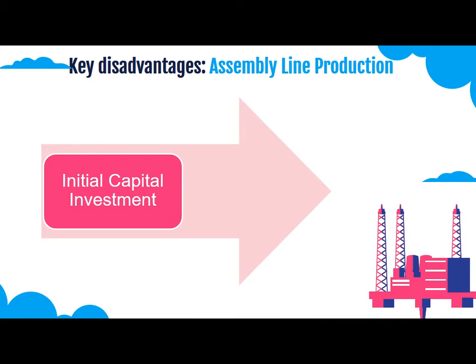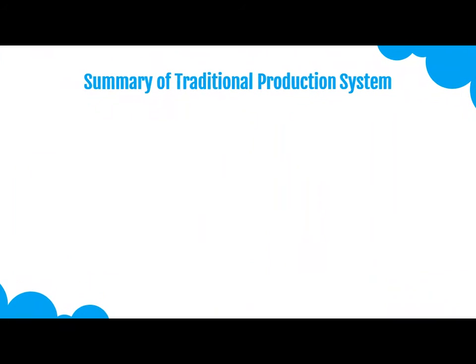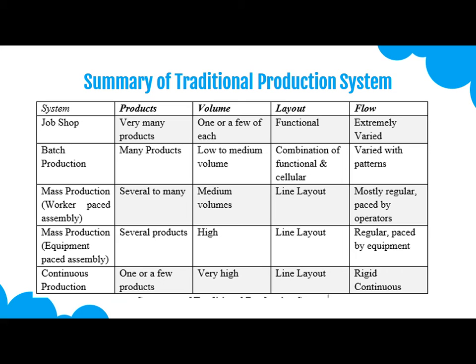There are three disadvantages of assembly line production. Initial capital investment is the key disadvantage, along with repetitive and monotonous work, which is a disadvantage for the laborers.